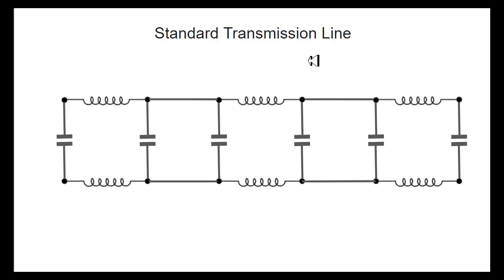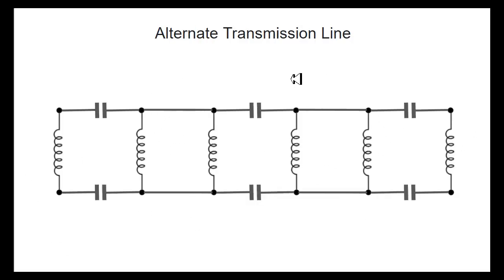And also, in the standard transmission line, the inductors are wired in series and the capacitors are wired in parallel. And in the alternate transmission line, the inductors are wired in parallel and the capacitors are wired in series. And series and parallel are also incommensurate principles.